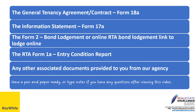You should have the following documents in front of you: the Form 18A, the General Tenancy Agreement Contract, the RTA Form 17A, and the Information Statement. The bond information will be provided to you from our agency, along with RTA lodgement links to lodge your bond online direct to the RTA, or the Form 2 bond lodgement.